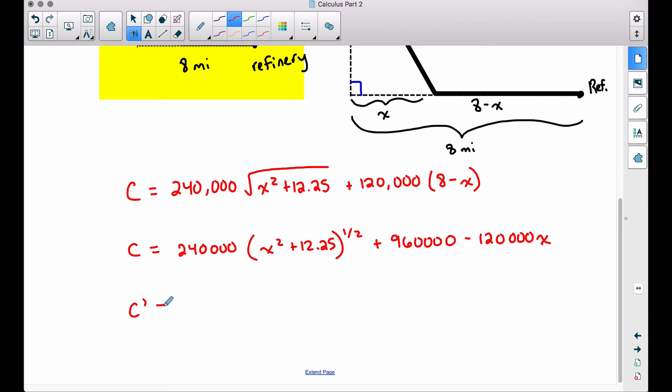Now we're ready to find the derivative. And again, we are finding the derivative of cost because we're trying to minimize the cost. Whatever you're trying to maximize or minimize in an optimization problem, that is the formula that you want to take the derivative of. And it's also good to make sure you have that formula in terms of a single variable. So finding the derivative of this piece here, let's pull the 1 half down and apply the chain rule here. So half of $240,000 is $120,000. Let's leave the inside alone. Let's not forget to subtract 1 from the exponent. And then we have to come back and multiply by the derivative of the inside, which is going to be just 2x. The derivative of this constant is going to be 0, and the derivative of negative 120,000x is minus 120,000.